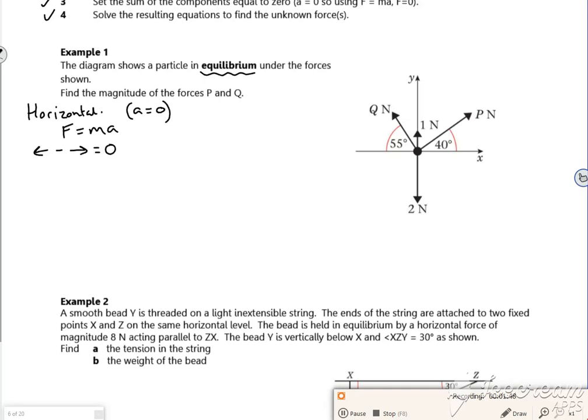So I'm going to look horizontally, so I'm saying that left minus right is equal to zero because mass times zero is zero. So what have I got going left? So left, if I do it in blue, left is this force here which would be Q cos 55.